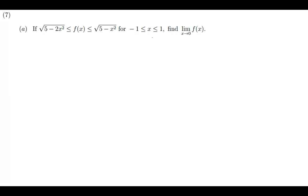Welcome to today's tutorial. We're going to be discussing limits. The question on the board is: if the square root of 5 minus 2x squared is less than or equal to f of x, less than or equal to the square root of 5 minus x squared, for all values of x ranging from negative 1 to 1 — find the limit of f of x when x approaches 0. I'm going to use what is called the squeeze theorem to solve this question.